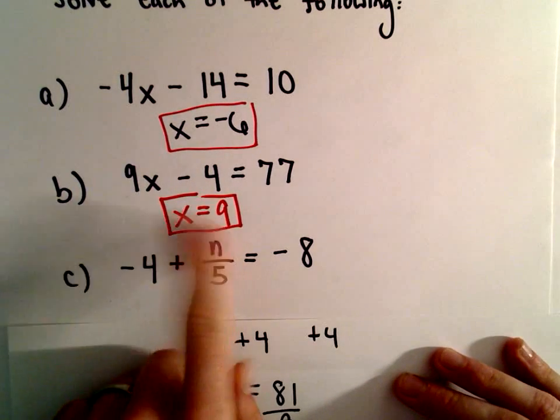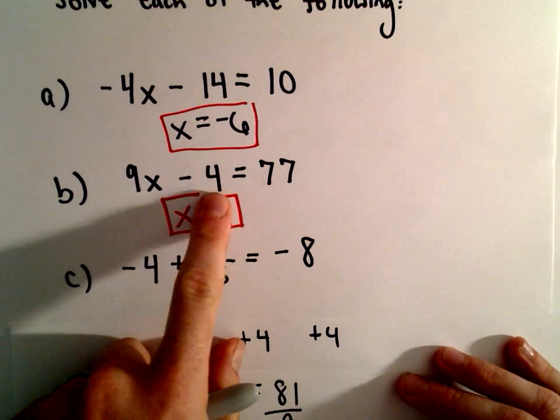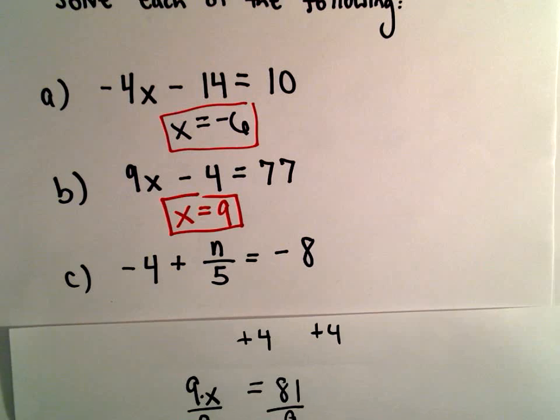And again, notice you can always check these. 9 times 9 would be 81. 81 minus 4, hey, that is 77. So you can always check them.